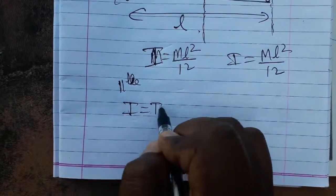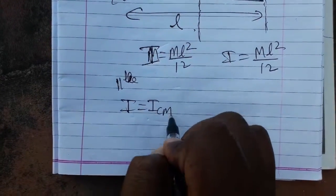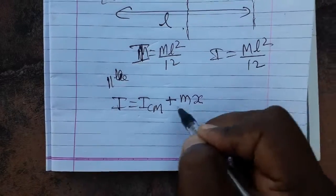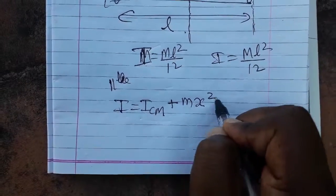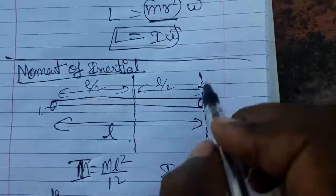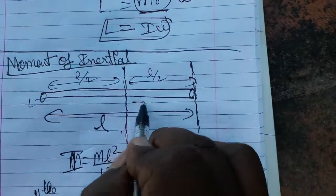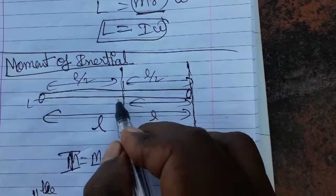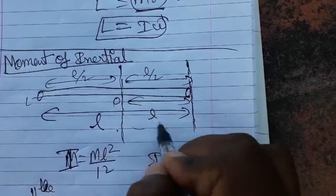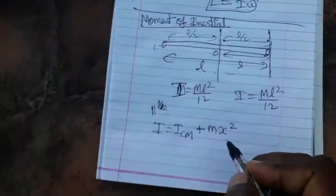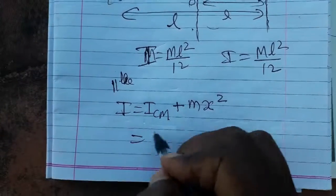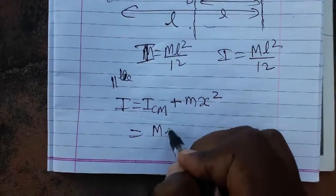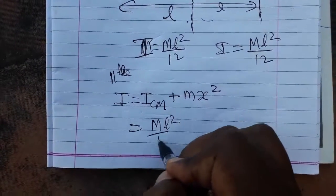According to the parallel axis theorem, total inertia equals inertia at the center of mass plus mass times the square of the distance between the parallel lines. The distance from the center to the edge is l/2. So I_cm = ml²/12.